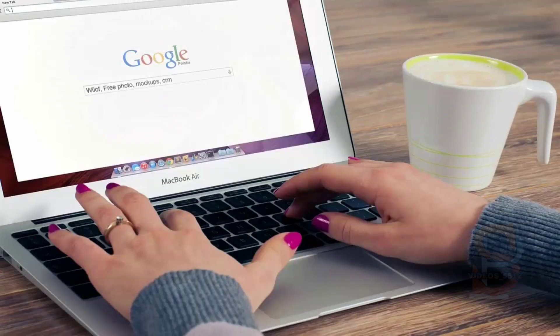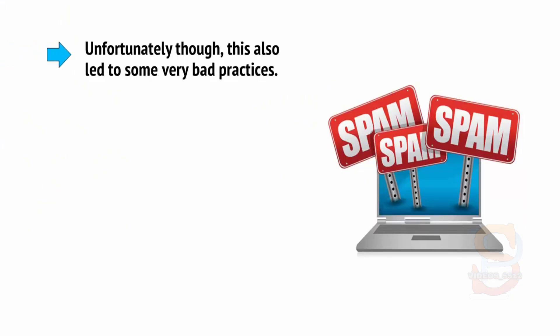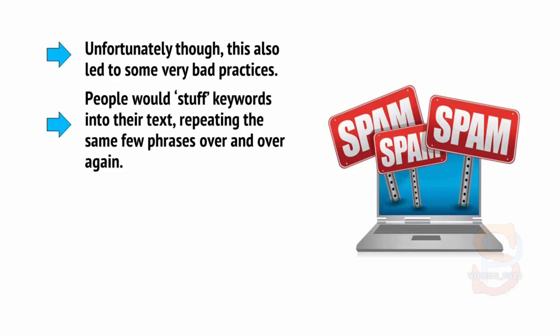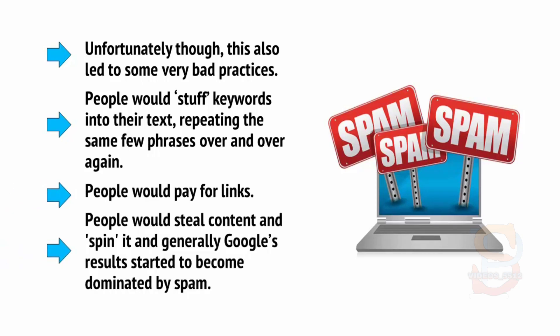Back then, it was easy enough to manipulate Google into doing your bidding. All you had to do was to create a website with lots and lots of content, repeat the same keywords over and over again, and get lots of other sites to link to you. It was literally a matter of whoever worked the fastest could get to the top of Google the quickest. Unfortunately, though, this also led to some very bad practices. People would stuff keywords into their text, repeating the same few phrases over and over again. People would pay for links. People would steal content and spin it, swap words for synonyms, and generally Google's results started to become dominated by spam.